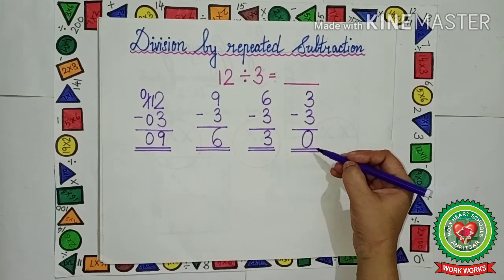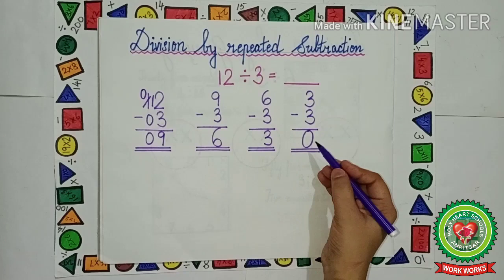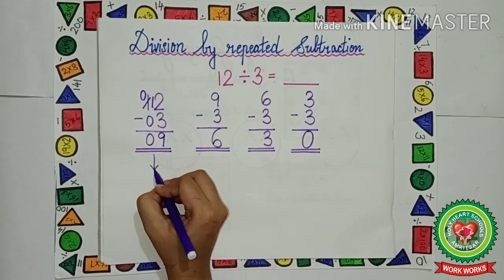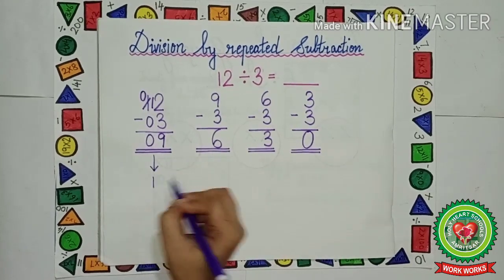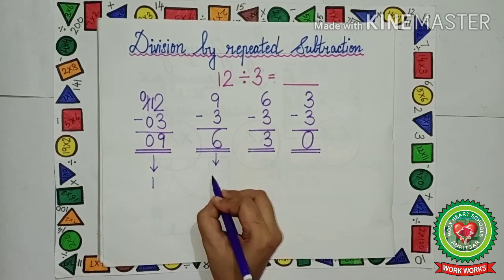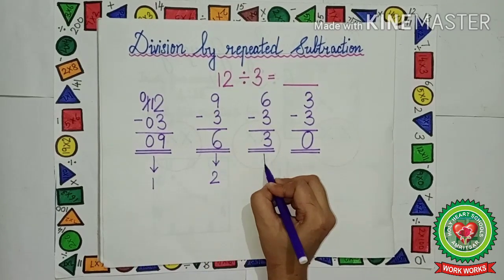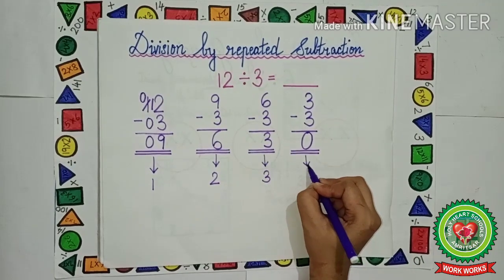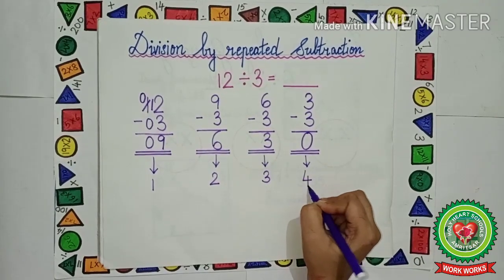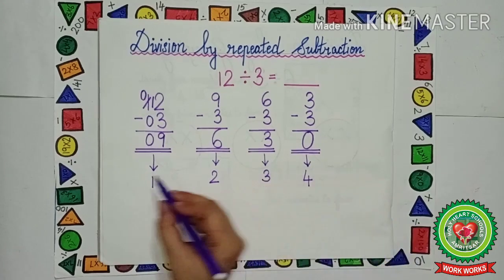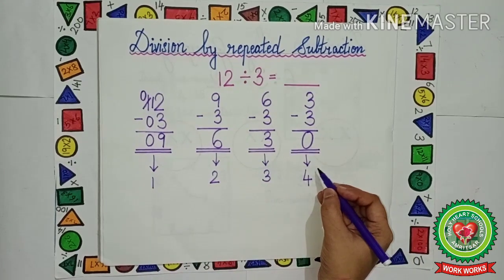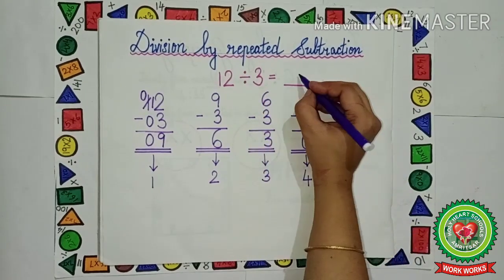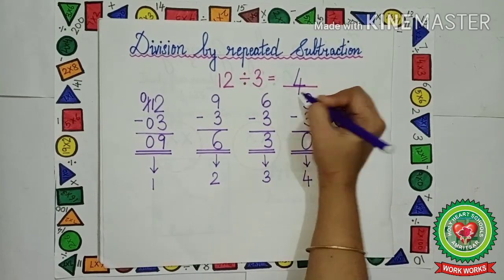Now let us count how many times did we subtract: 1, 2, 3, 4. That means we have subtracted it 4 times. So 12 divided by 3 is how much? That is 4.